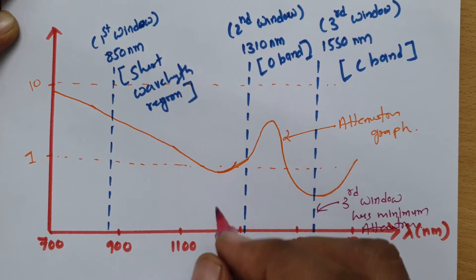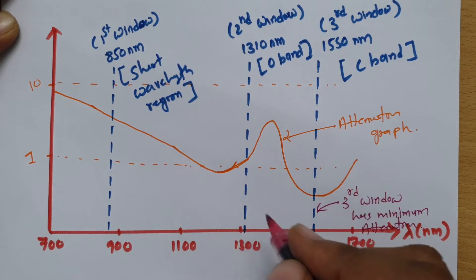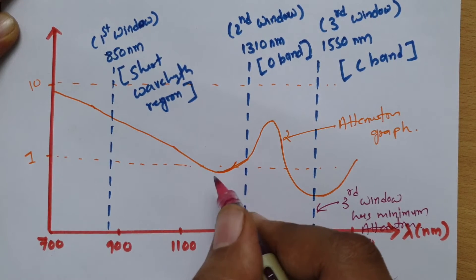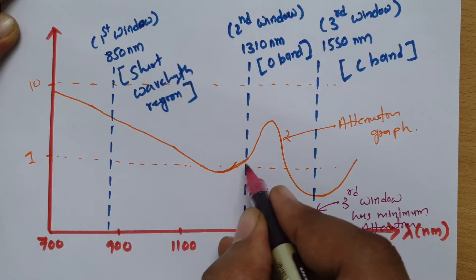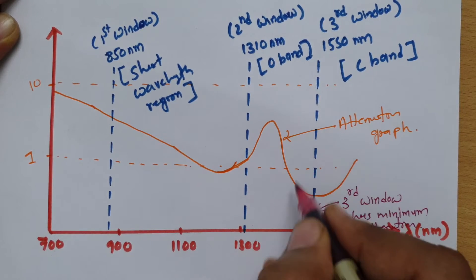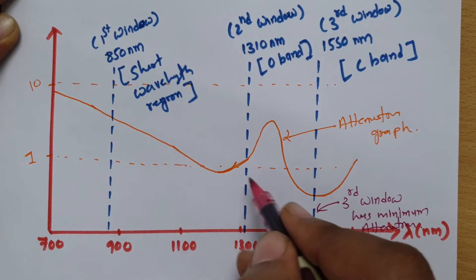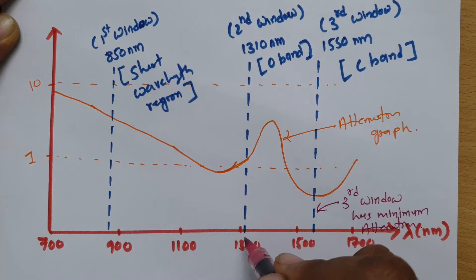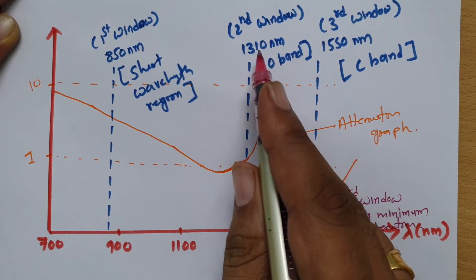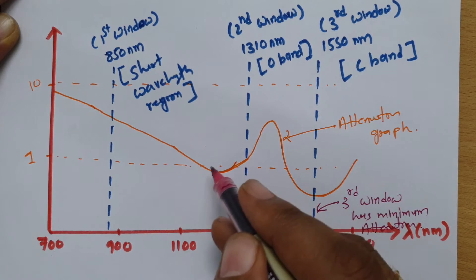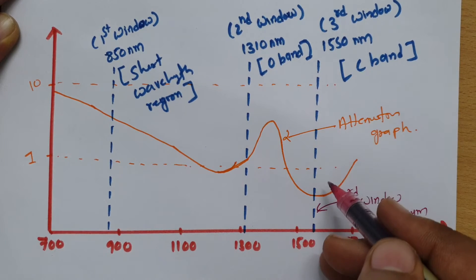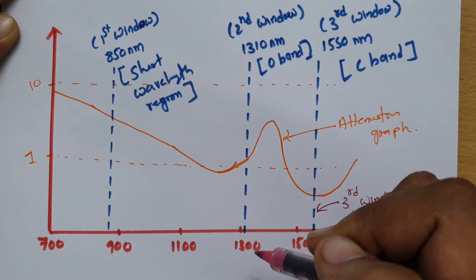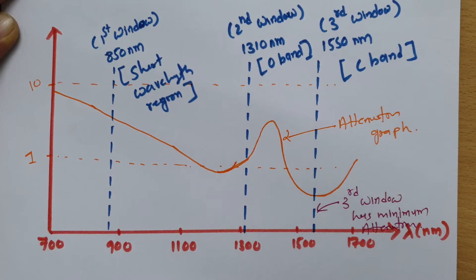Observing the attenuation graph, there is also a spike at 1310 nanometers where attenuation is relatively low, but the minimum attenuation overall is at 1550 nanometers. This shows how much signal gets attenuated as it propagates along the optical fiber.